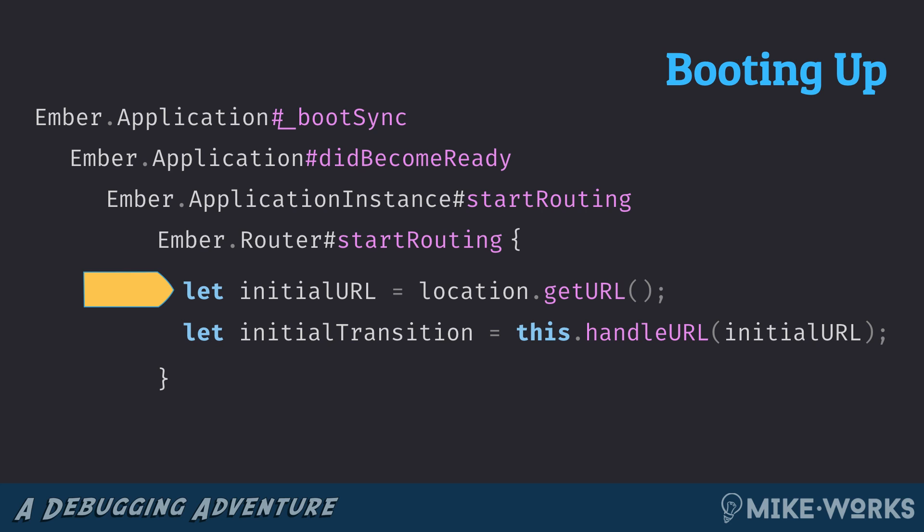That begins by just getting the initial URL from the location. Remember, location is just the thing that provides us a URL by listening to some source of truth — it could be getting a URL from a hash change event or from the HTML5 history API. But this is ultimately what we use to normalize all of that and tell our router what to do.